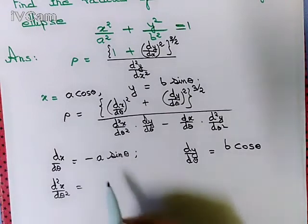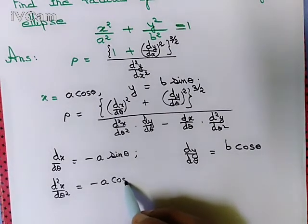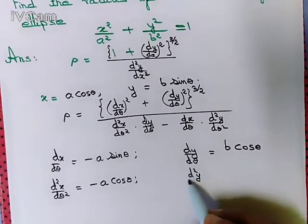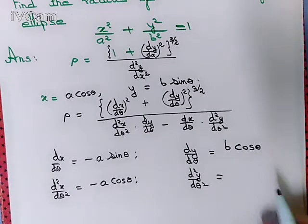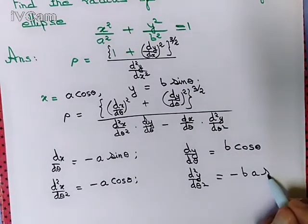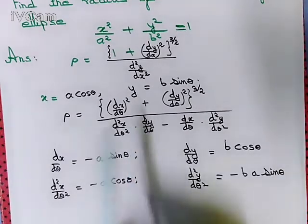The derivative of sinθ is cosθ, so d²x/dθ² = −a·cosθ. And d²y/dθ²: the derivative of cosθ is −sinθ, so d²y/dθ² = −b·sinθ.